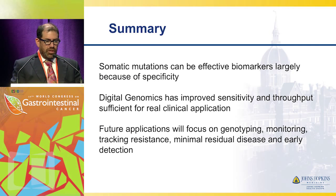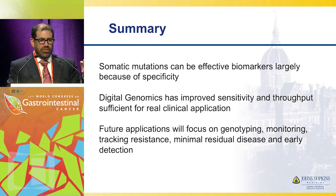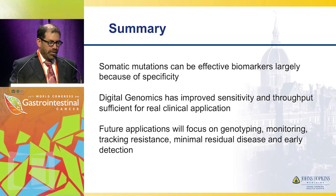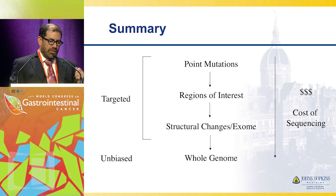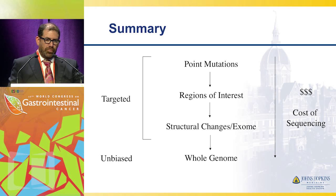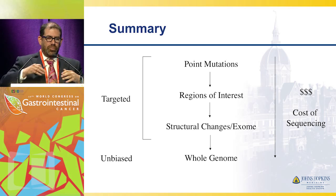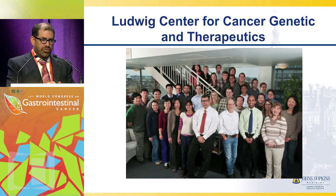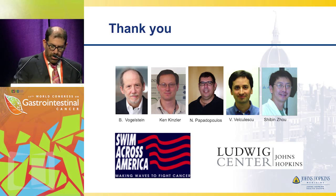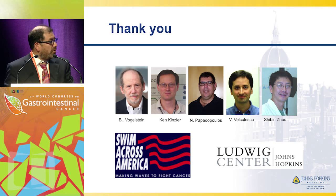In summary, somatic mutations can be biomarkers largely because of their specificity. New technology — digital genomics and next generation sequencing — will open the door to future applications including genotyping, monitoring, tracking resistance, minimal residual disease detection, and early detection. This will become even more feasible as sequencing costs decrease, allowing us to look at not just point mutations but many genes, structural changes, and eventually the whole exome and whole genome. Thank you to the Ludwig Center for Cancer Genetics and my mentors, colleagues, and supporters with Swim Across America.